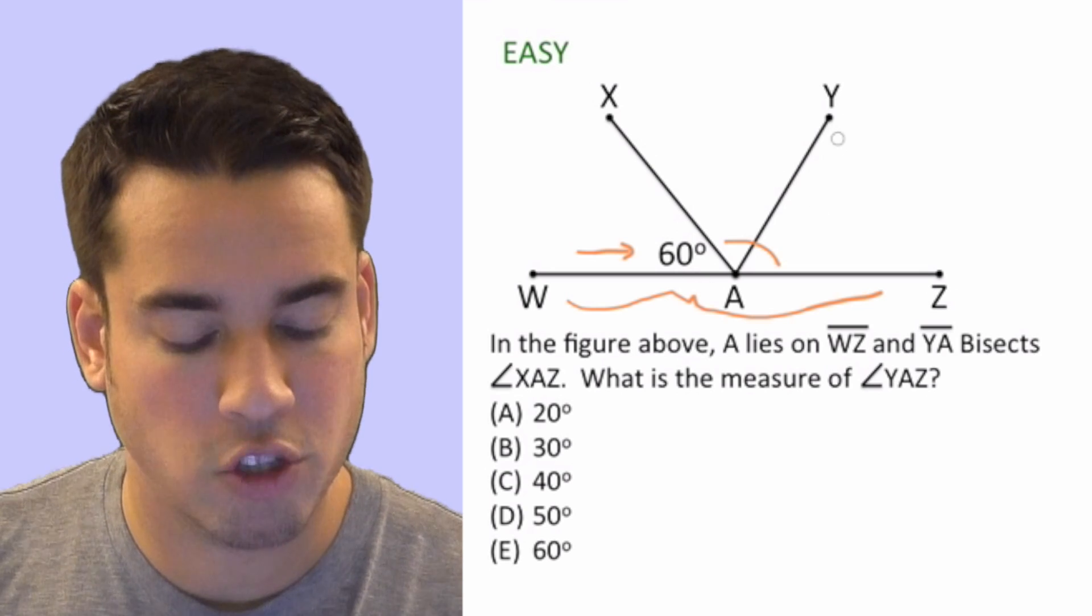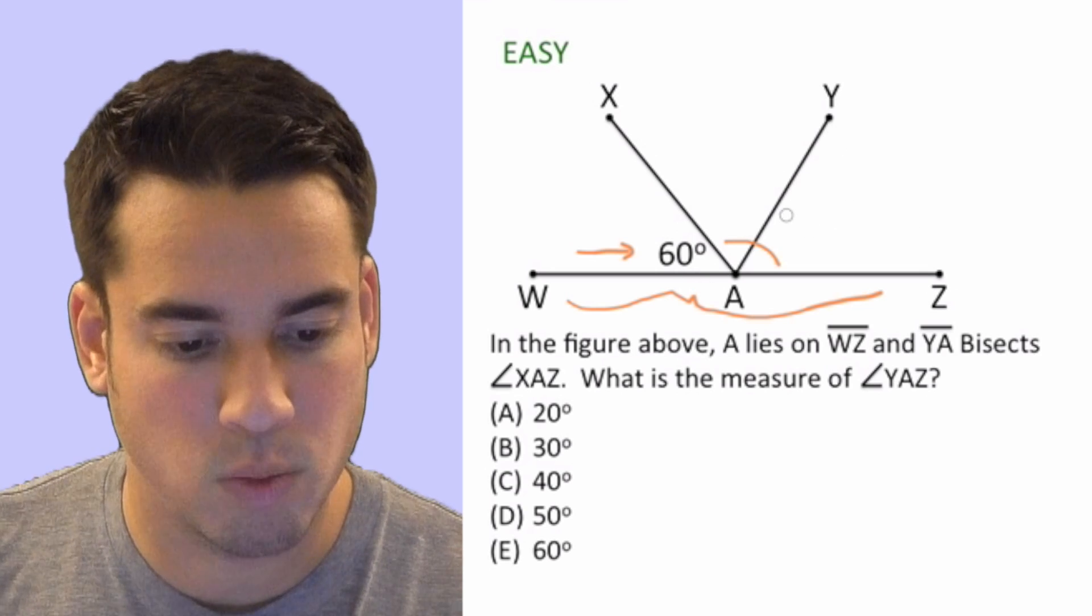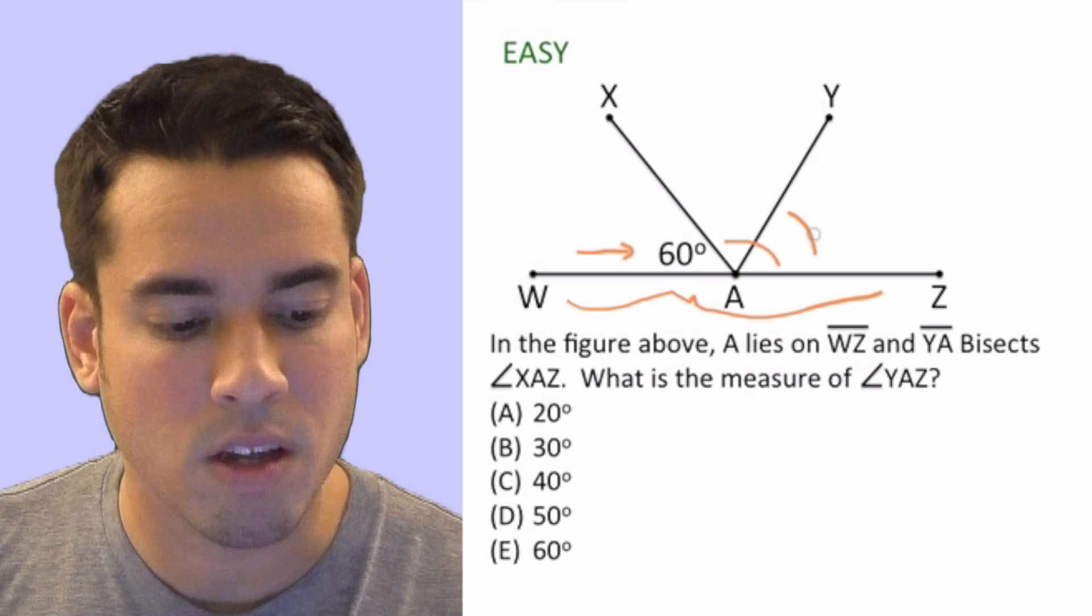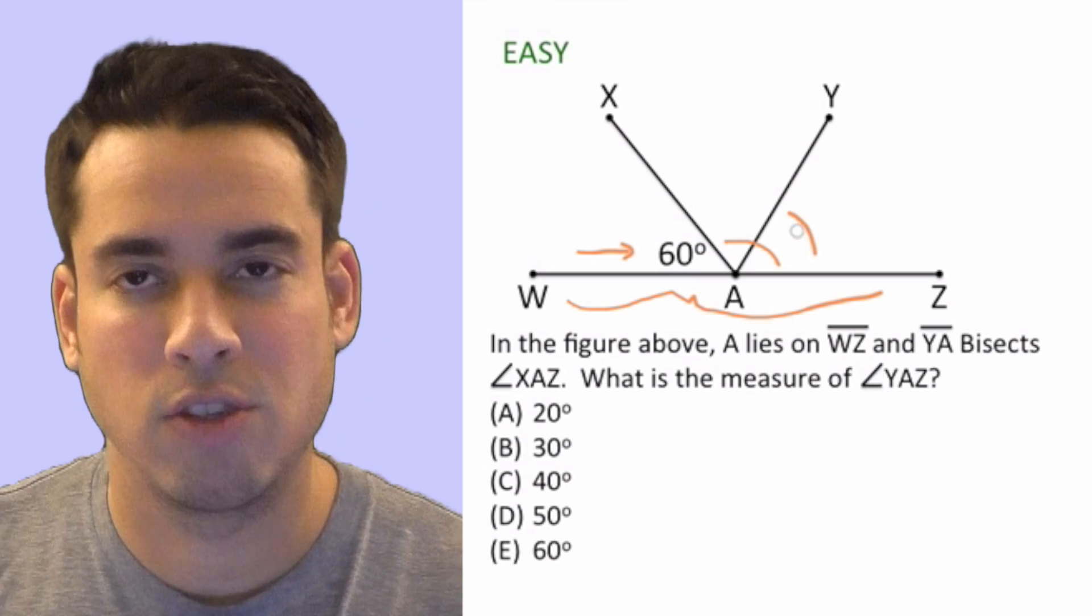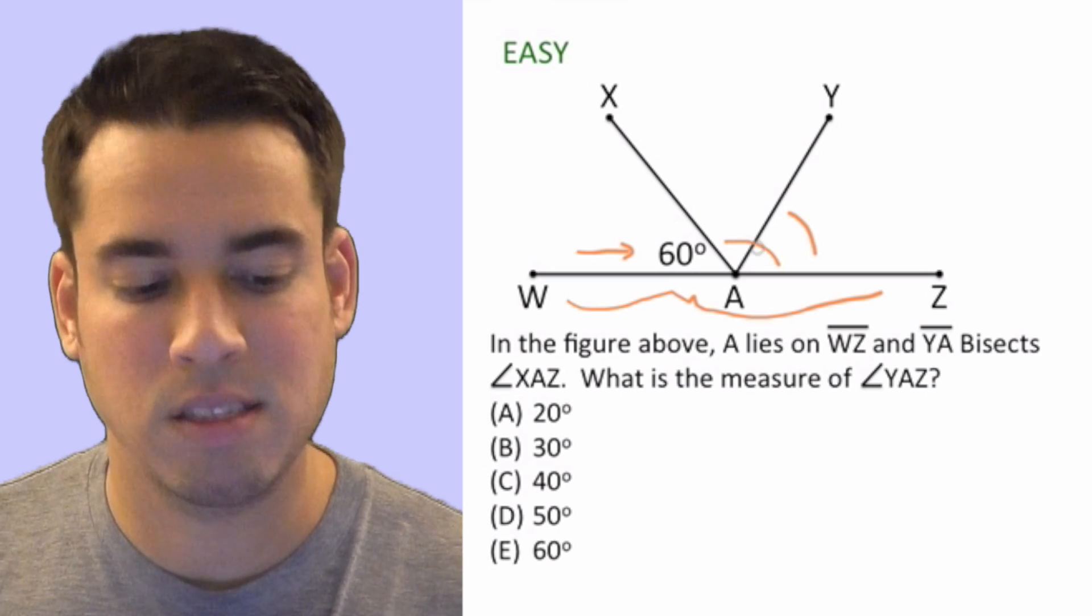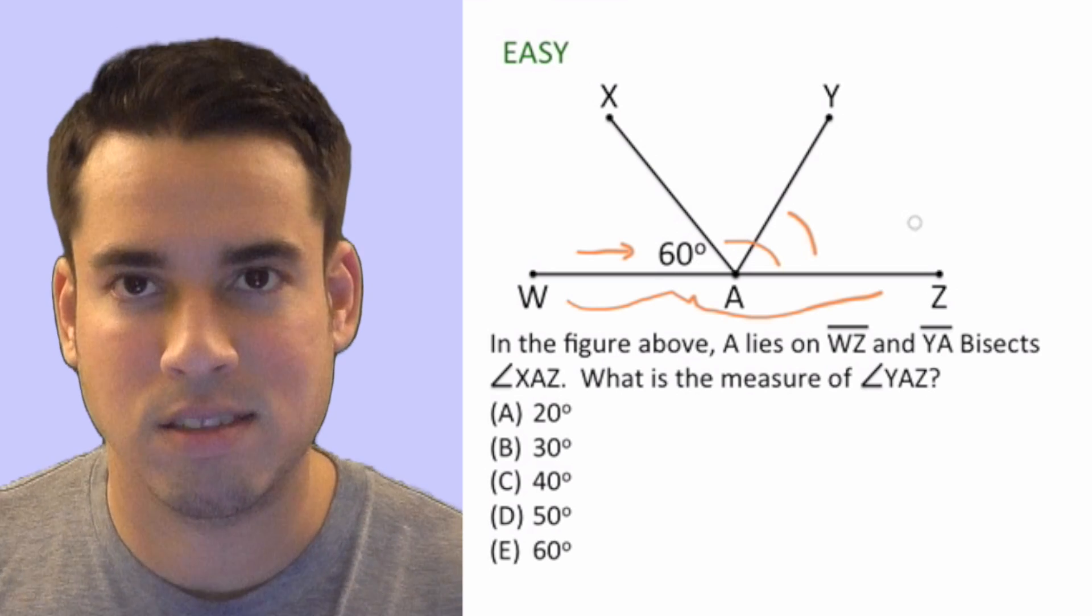Then it says, what is the measure of YAZ? And YAZ is this angle. Okay, so what we're going to have to use to answer this question is basically our knowledge of straight lines and angles.